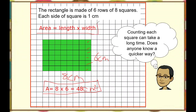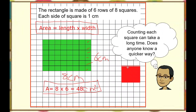Now if we have a square, remember a square has equal sides. So counting gives us 3 by 3. The area of this square is just multiply it by itself: 3 times 3 equals 9 centimeters squared.